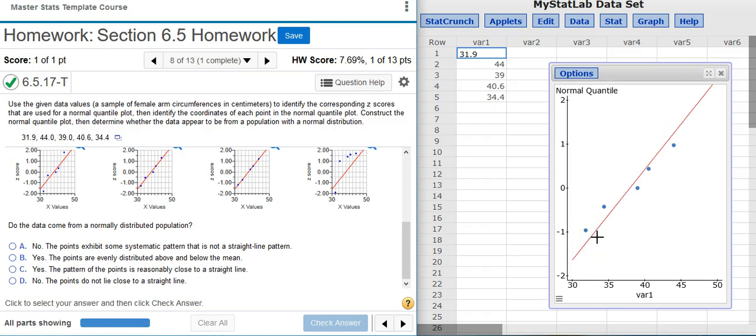So don't get caught up in little details when you're answering these types of questions. Just look for a general trend. The general trend here is that my data points are fairly close to the line and they're not making any sort of pattern like an S or sinusoidal pattern that would indicate something other than a normal distribution. So I'm going to conclude that yes, these points are representing what's reasonably close to a straight line. That is answer option C.